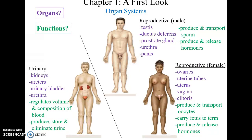The urinary system involves the kidneys, ureters connecting the kidneys to the urinary bladder, and the urethra. While we think of it as producing, storing, and eliminating urine, its truly key function is regulating the volume and composition of blood.